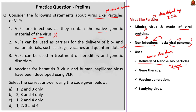Statement 3 — 'VLPs can be used in treatment of hereditary and genetic disorders' — is correct. Virus-like particles can also be used as gene therapy tools. Statement 4 — 'Vaccines for Hepatitis B virus and human papillomavirus have been developed using virus-like particles' — is also correct. Since VLPs lack genetic material and are non-infectious, they are perfect candidates for making vaccines. VLP-based vaccines are already available for Hepatitis B and human papillomavirus. The question asks for correct statements; statements 2, 3, and 4 are correct. The correct answer is Option B, 2, 3, and 4 only.